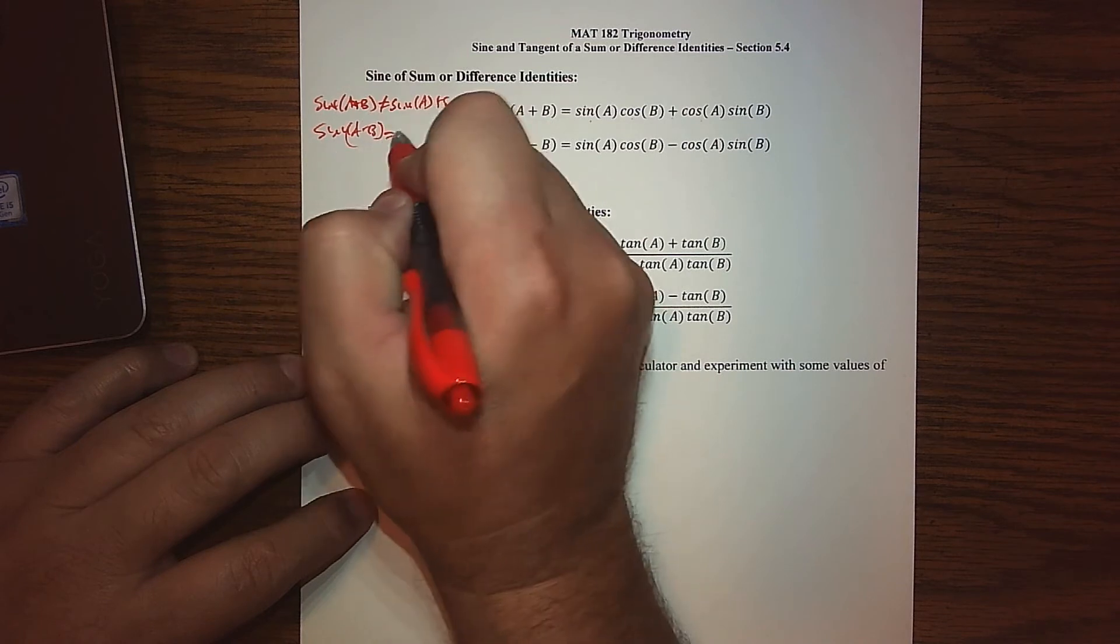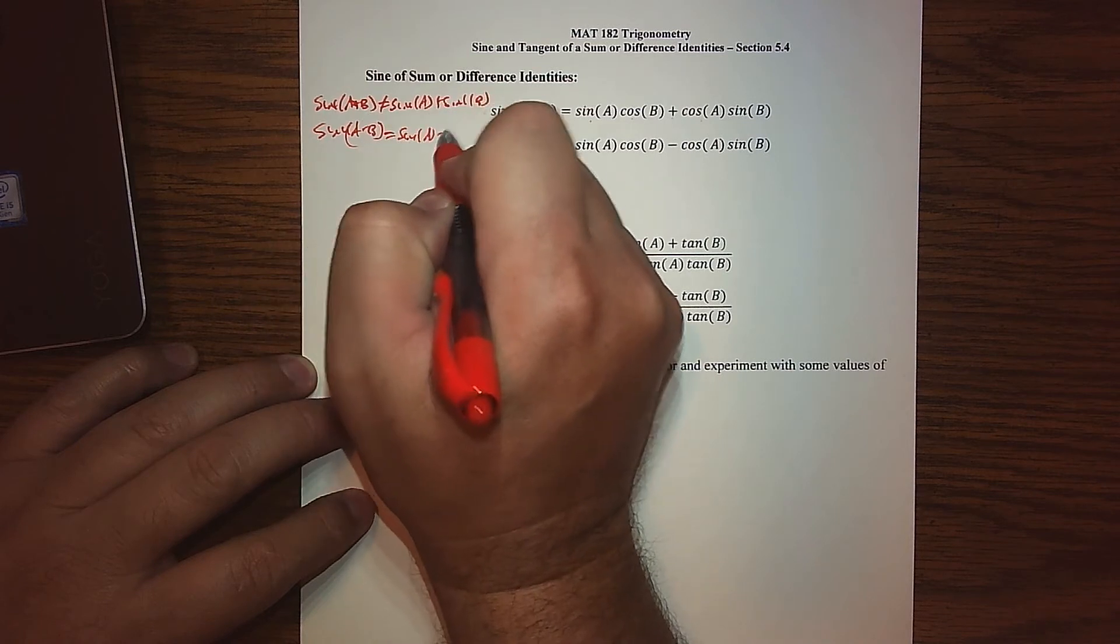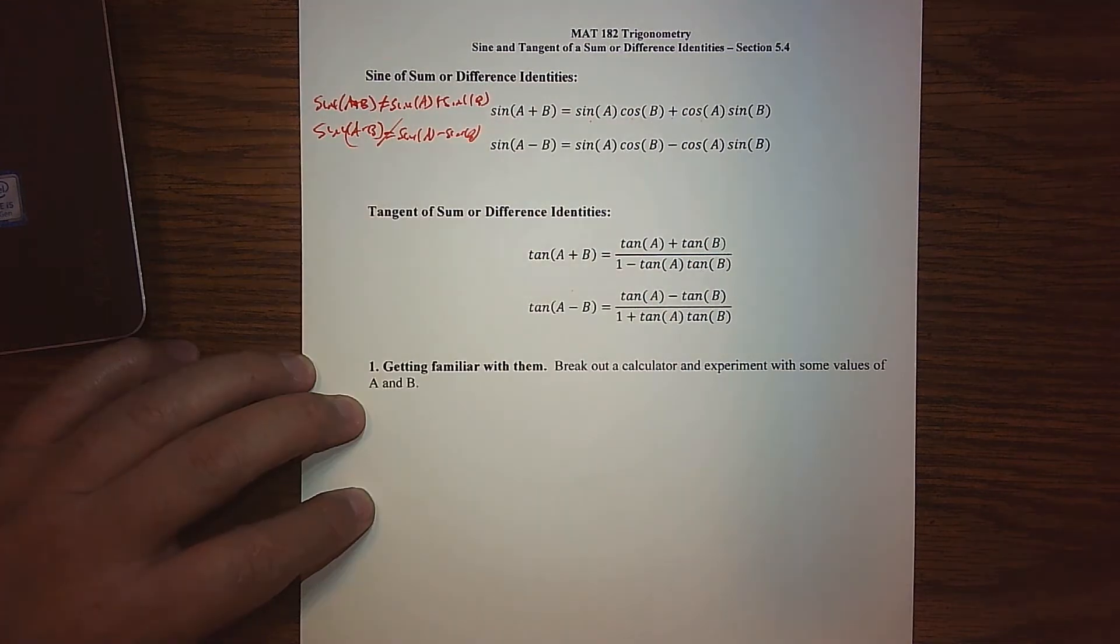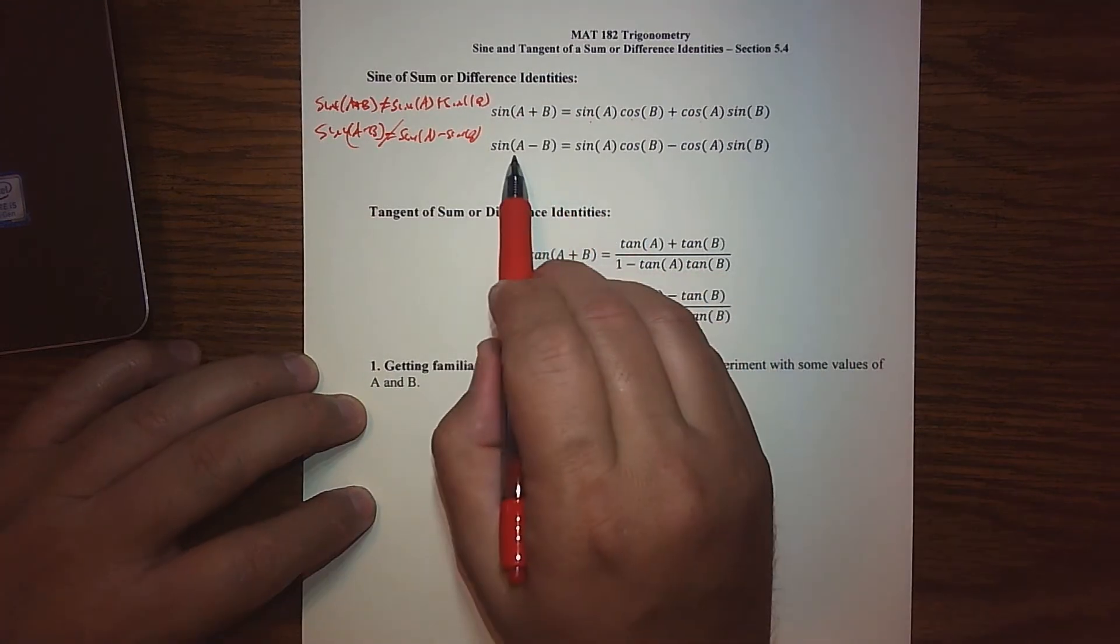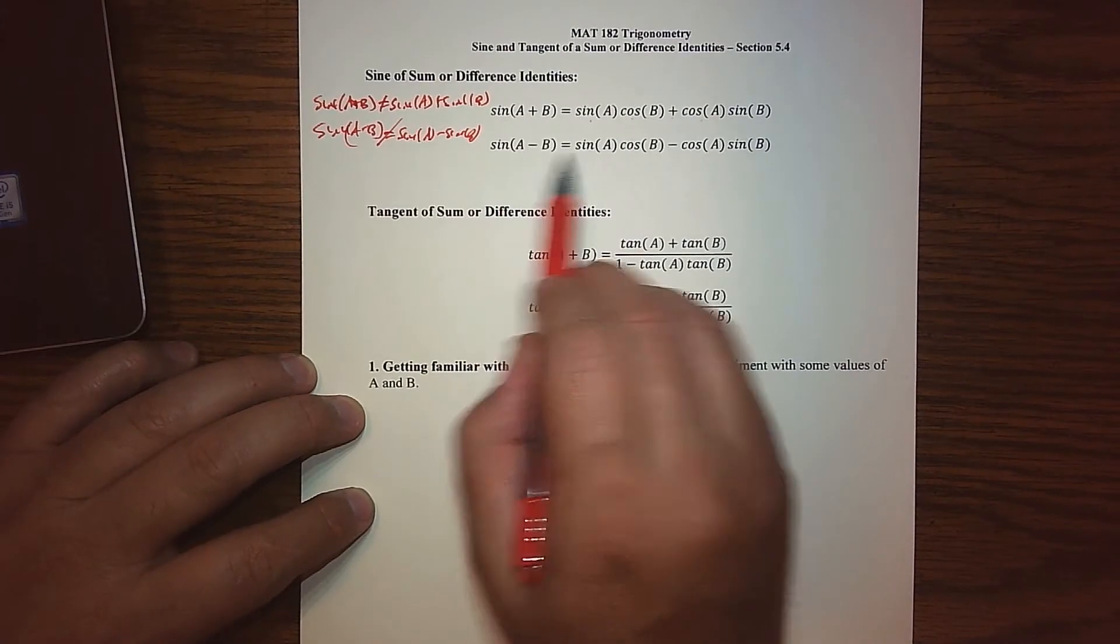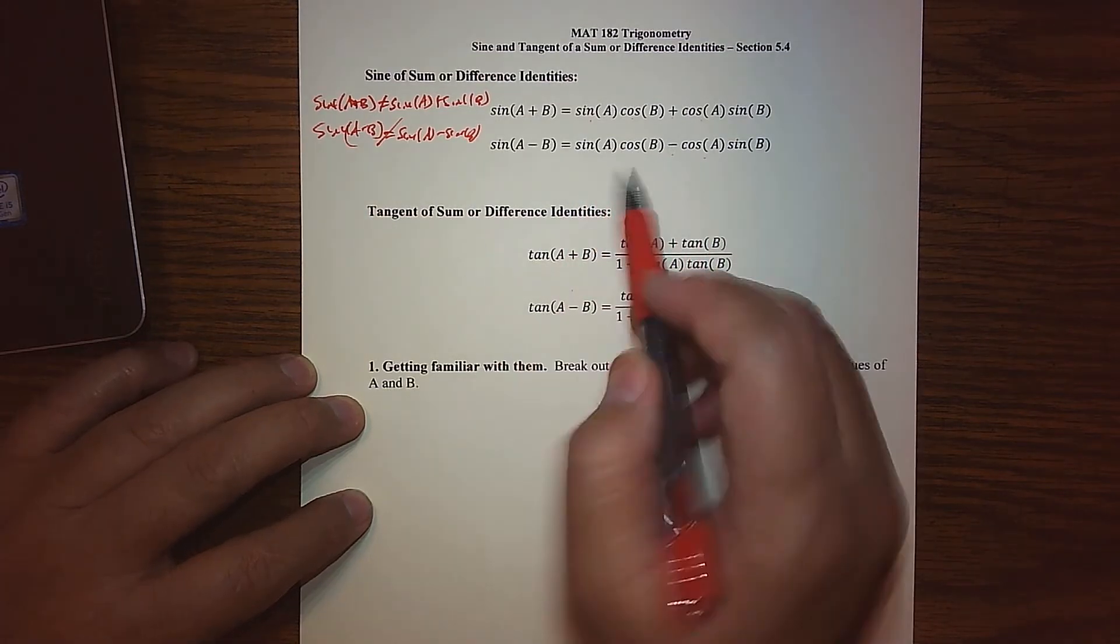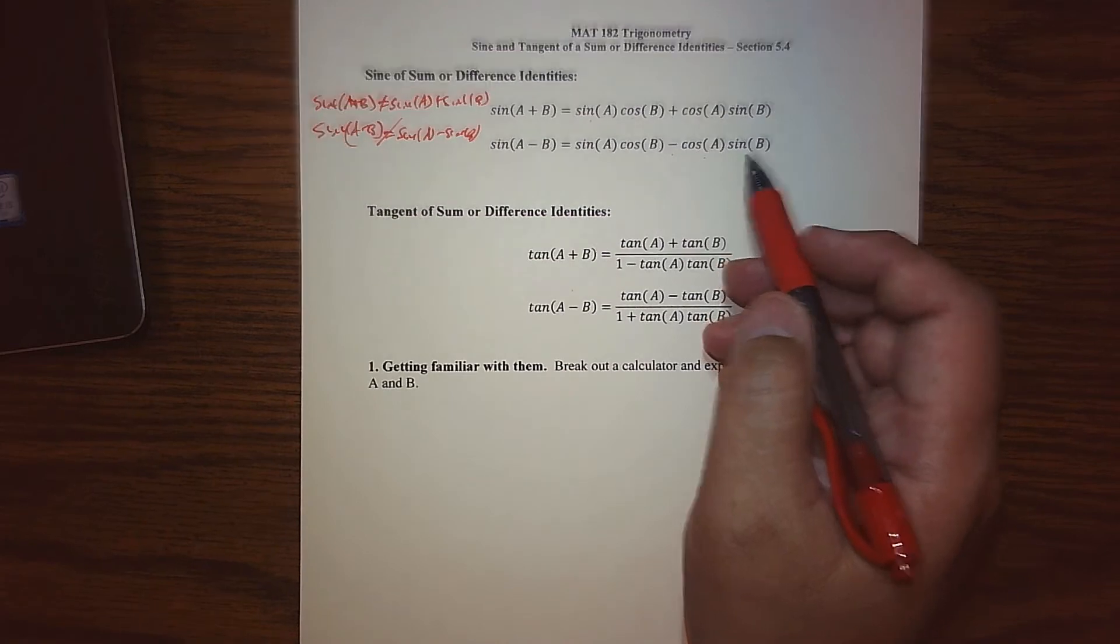And then the same thing with the sine of the difference, fight the urge to make the mistake of distributing the sine because that's not what happens. We do not distribute function names. The sine of a difference is basically the sine of the first cosine of the second minus the cosine of the first sine of the second.